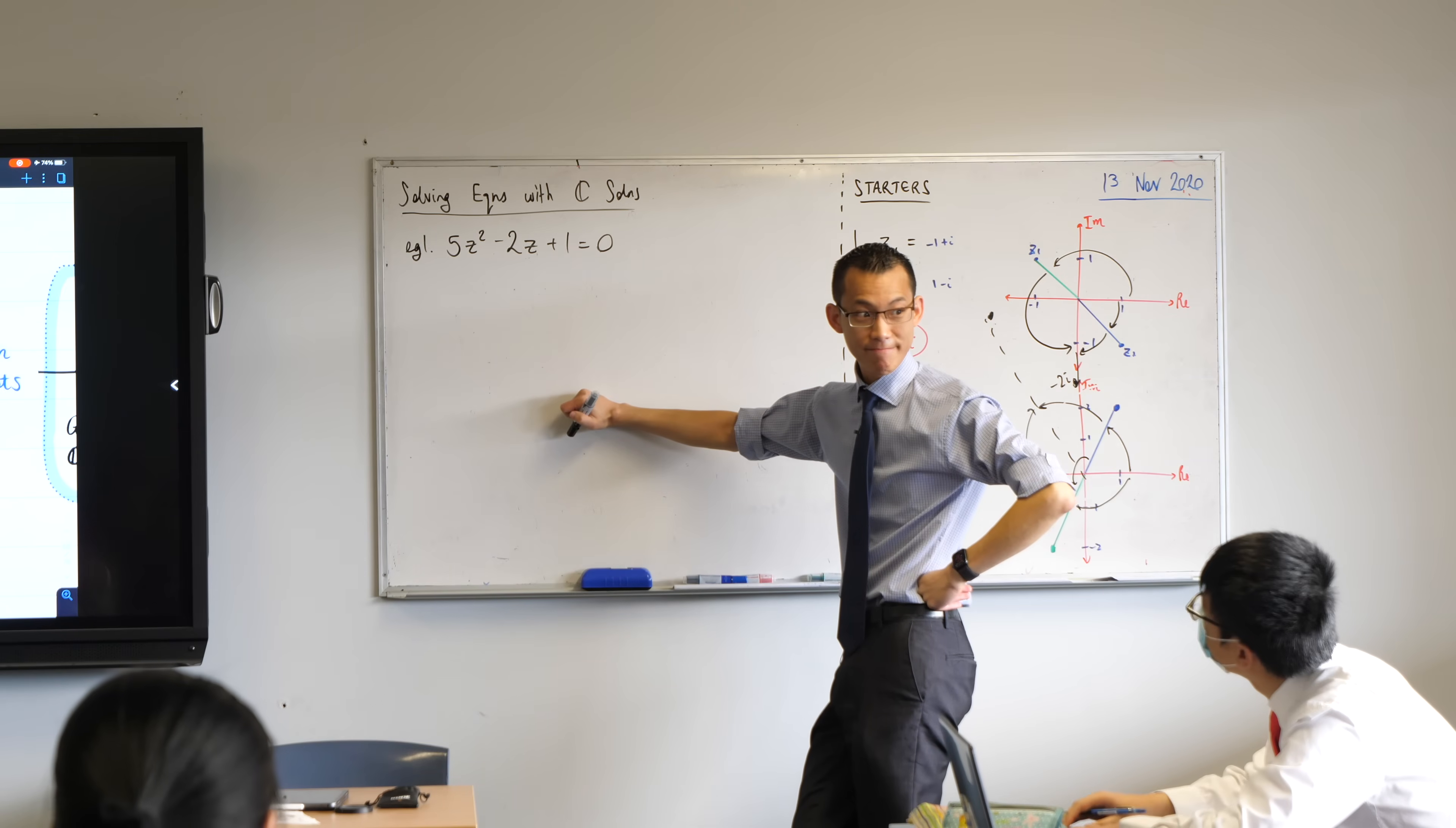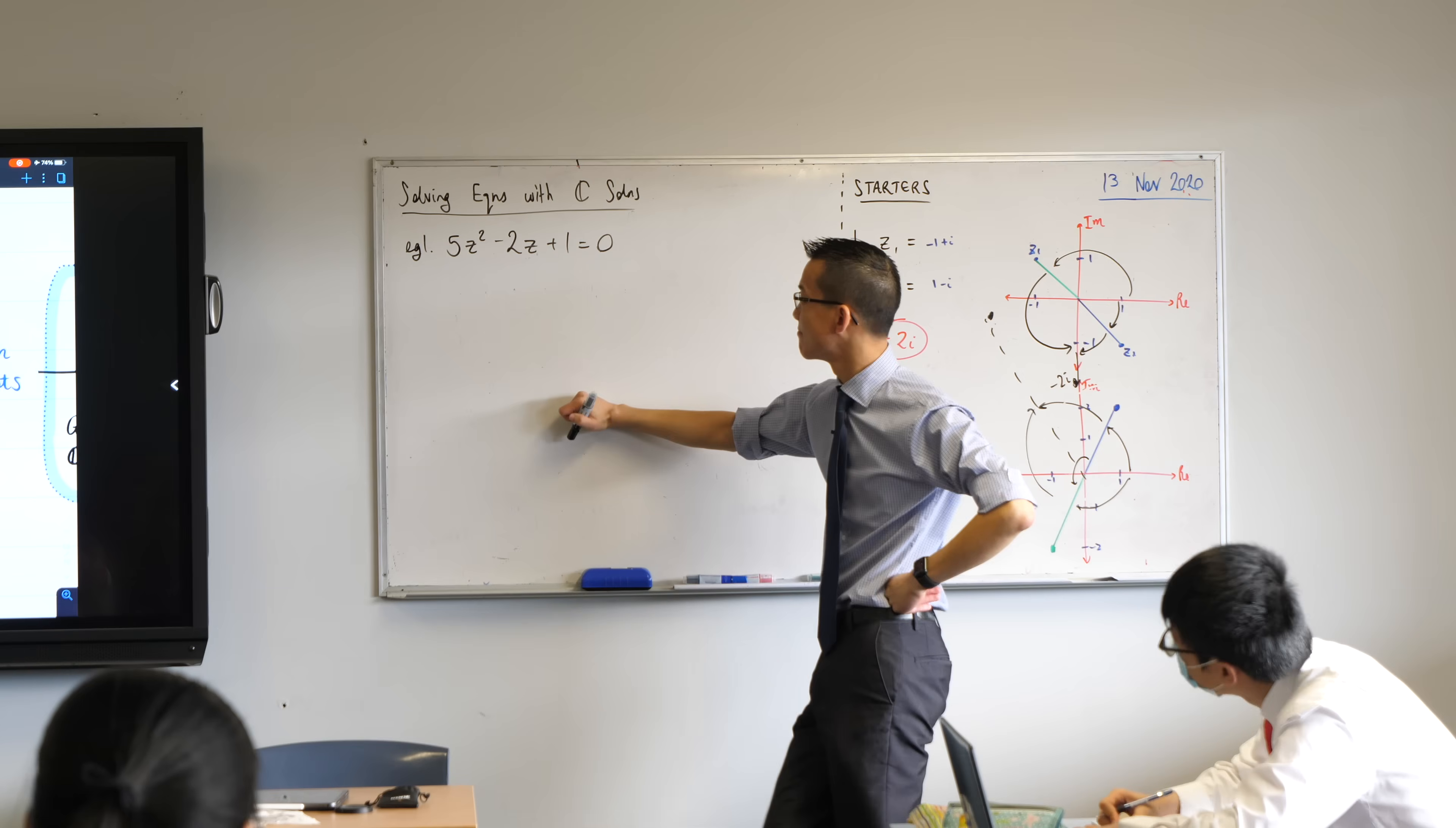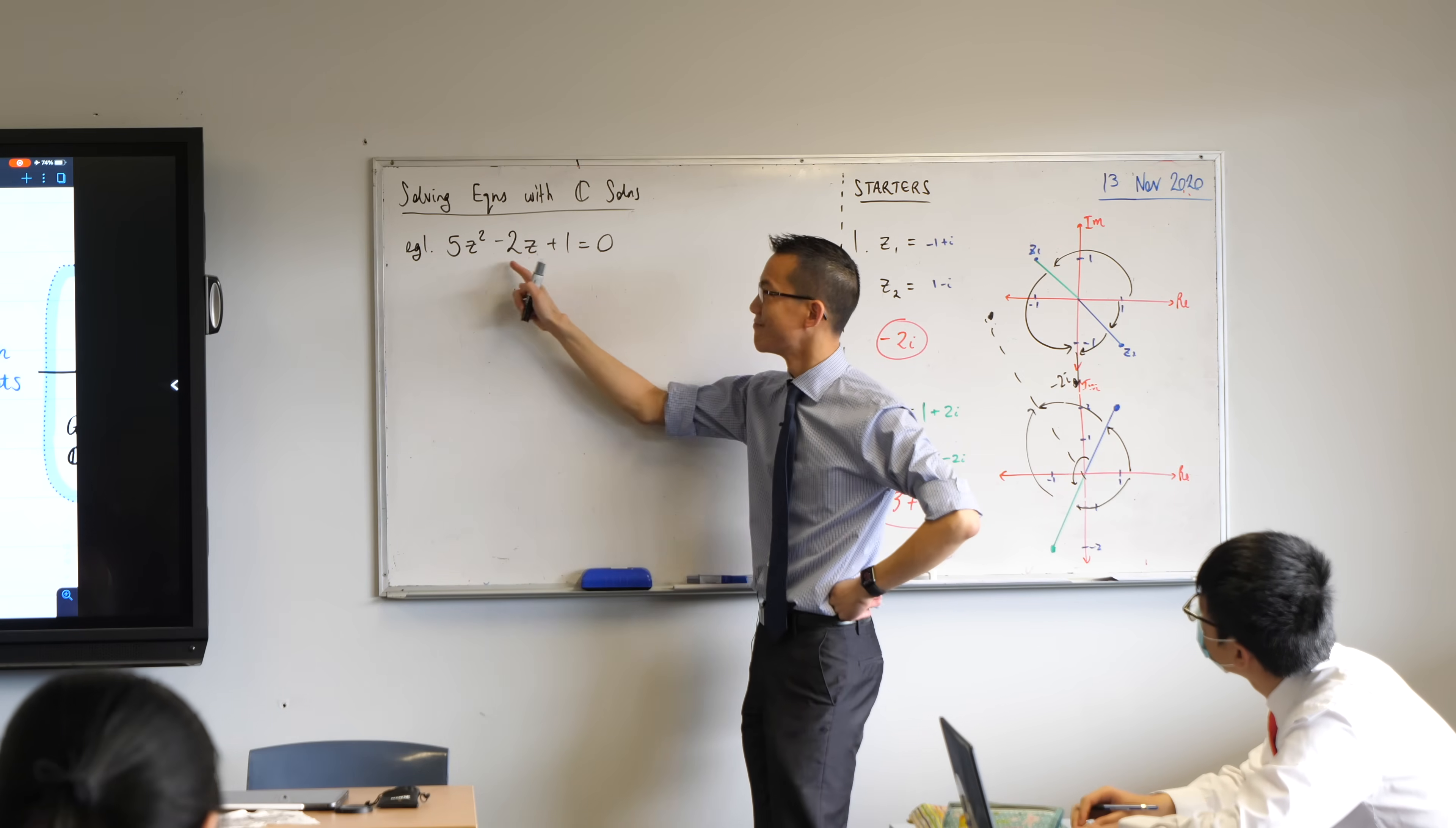Yeah, go ahead, John. In this case, it's like 5, 2, and 1, weird numbers. You just formula and formula.